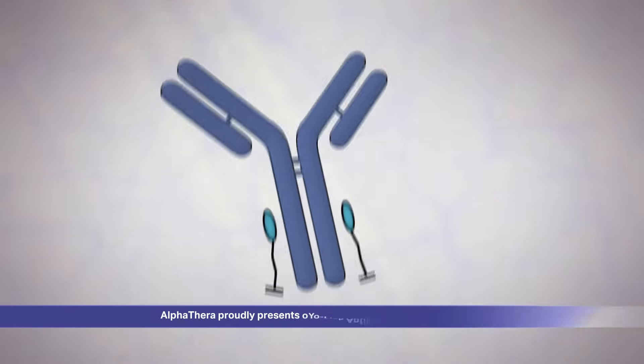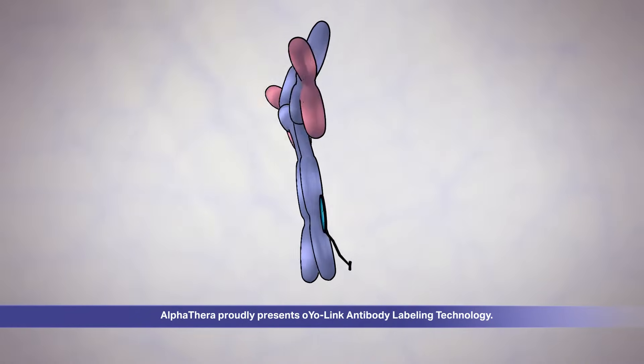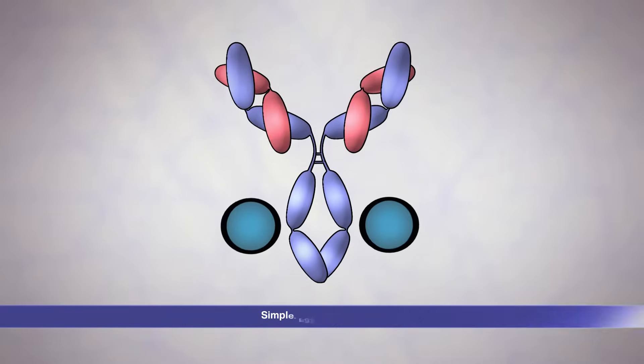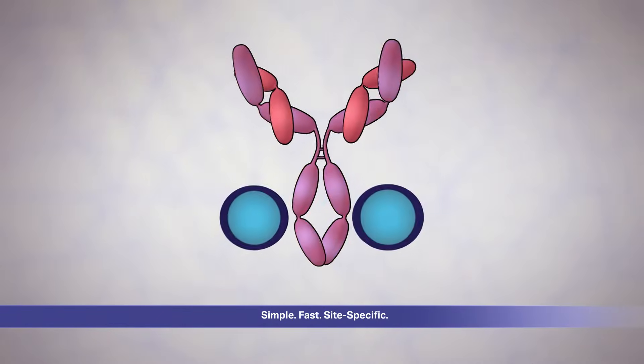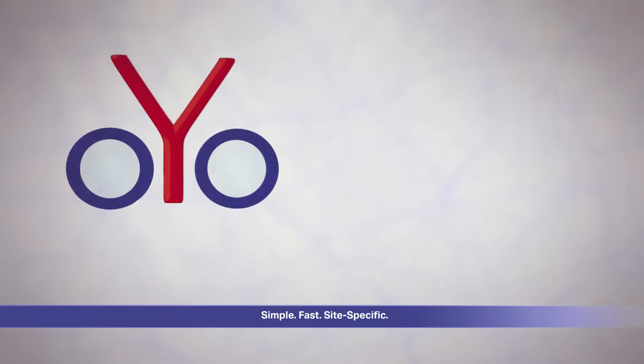With this in mind, AlphaThera proudly presents OyoLink antibody labeling technology, the world's simplest, fastest, and most efficient site-specific antibody conjugation method.